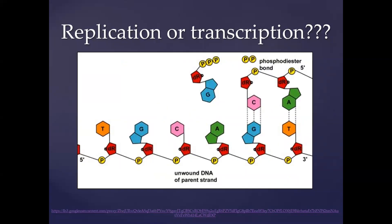Coming back to the diagram shown earlier, we can see the template at the bottom right — the sugar-phosphate bonds are already formed and this part acts as the template, representing the unwound parent strand. Nucleotides are joining in: we can see an A and a C. A key clue is the type of sugar: it is written 'DR' here, meaning deoxyribose sugar. The joining nucleotides also have a deoxyribose sugar, confirming these are DNA nucleotides. This represents one strand of the process of DNA replication.